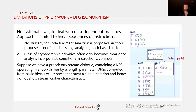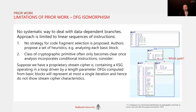However, there are a few limitations to this approach. First, there's no systematic way to deal with data-dependent branches, which presents a problem since the class of a cryptographic primitive often only becomes clear once analysis incorporates conditional instructions. For example, in a stream cipher the key stream generator typically operates in a loop driven by a length parameter — simply computing the DFG from the basic blocks would represent at most a single iteration and miss crucial characteristics as a result.